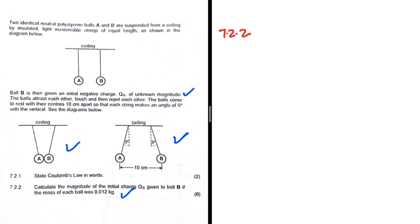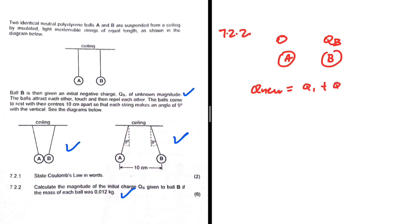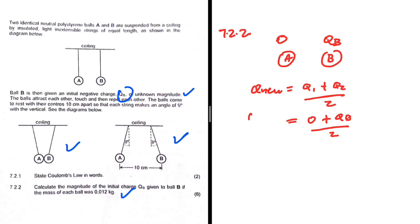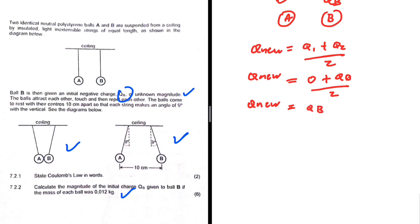Sphere B has a magnitude of qb initially and sphere A has a magnitude of zero because it is initially neutral. When they touch and separate, the new charge is q_new = (q1 + q2) / 2. Sphere A is neutral so its charge is zero, and sphere B has charge qb, so the new charge on both spheres is qb/2.